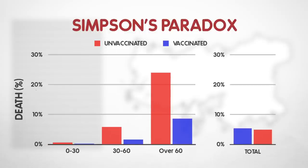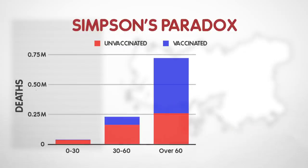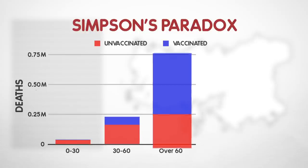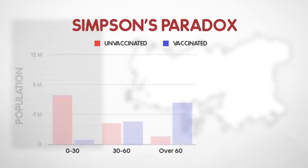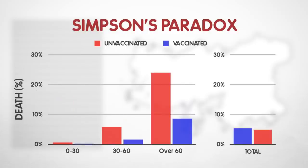It's usually the result of other factors not shown on the graph. In this example, it is that being old independently increases the likelihood of death and the likelihood of being vaccinated. So in this case, using only the combined data to draw conclusions about the vaccine's effectiveness would be incorrect.